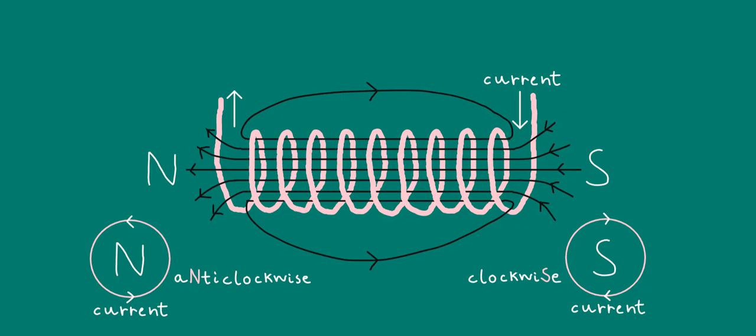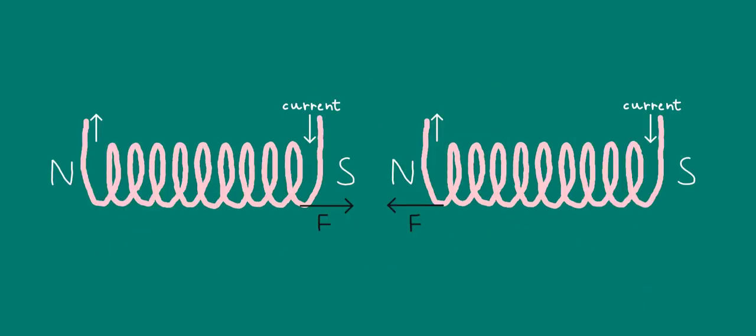Just so you're in no doubt, the fact that we can assign magnetic north and south poles to the ends of a solenoid means that if you bring two solenoids close together, current flowing in them, then they'll behave just like two bar magnets would. So, in this example here, because we've got a south pole and north pole close to each other, these two solenoids would experience mutual magnetic attraction towards each other.